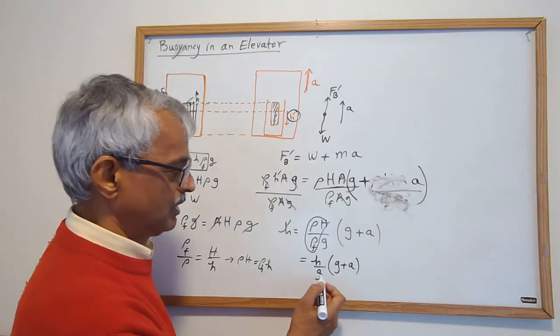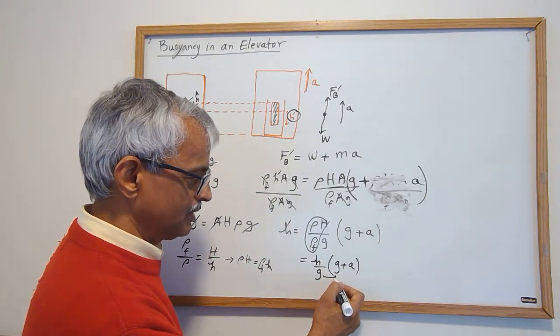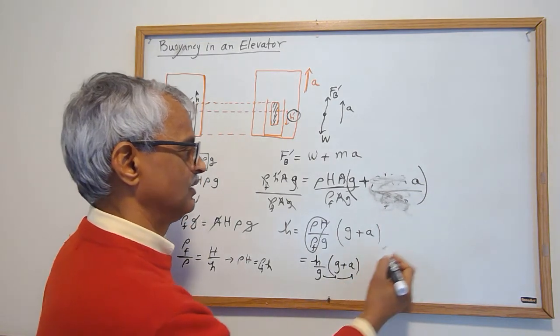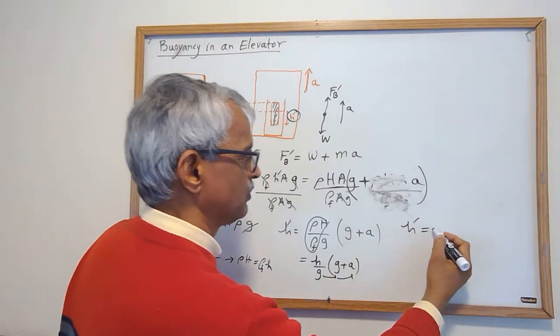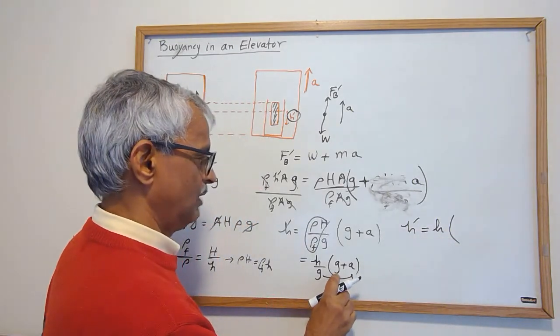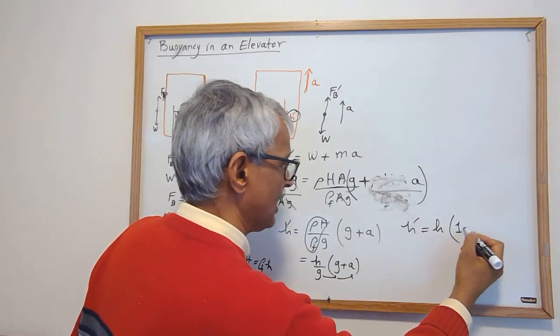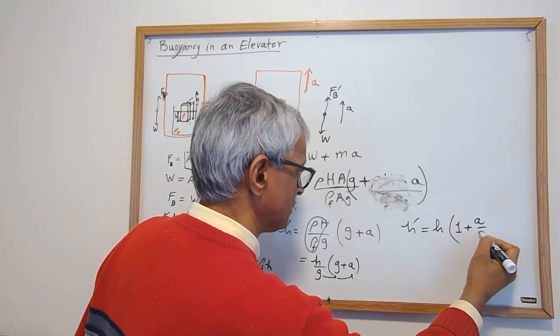This is a little ugly, I can bring this here and here, and so h prime turns out to be original h times g over (g+a) — wait, h times (1 + a/g).